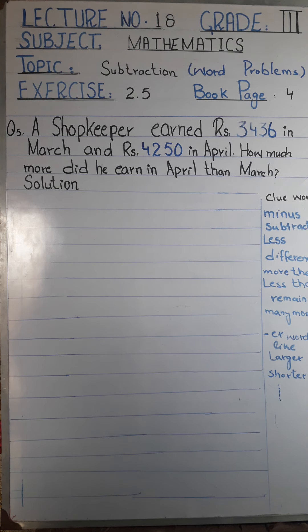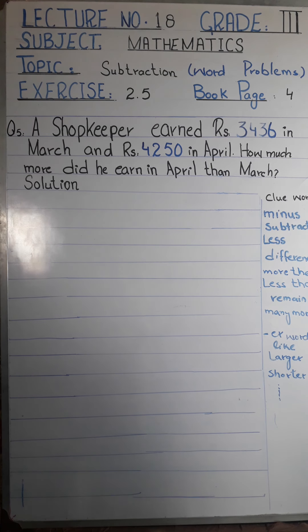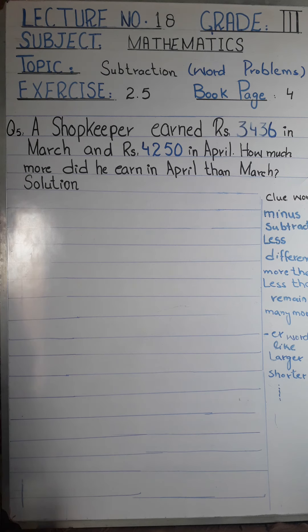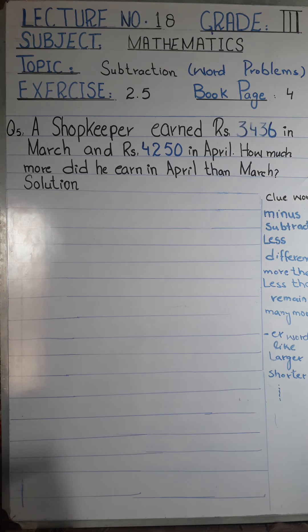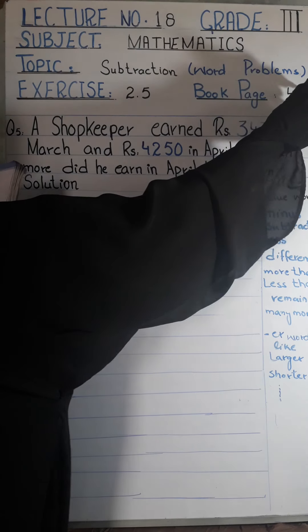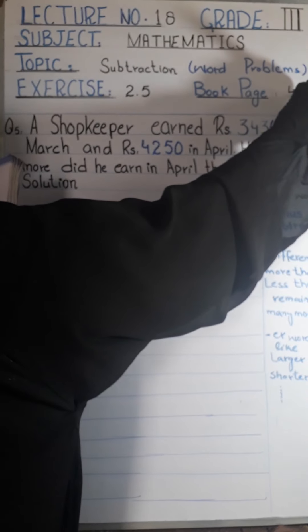Bismillah ar-Rahman ar-Rahim. Assalamu alaikum students. You have done your homework — the tables and three questions of subtraction with borrowing, Exercise 2.5, book page 41. Have all of you done it?